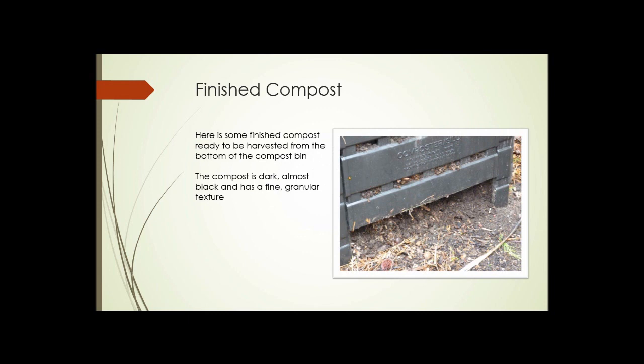Here we see the bin type composter that we looked at earlier with the door lifted partially up. And down here at the bottom, you can see finished compost. It's a dark, nearly black in color, fine granular texture. This is really well composted material down here. You can still see a few of the larger pieces in there, but that's fine. Doing it in a bin like this, turning it regularly, you can probably still make compost in six to eight weeks.